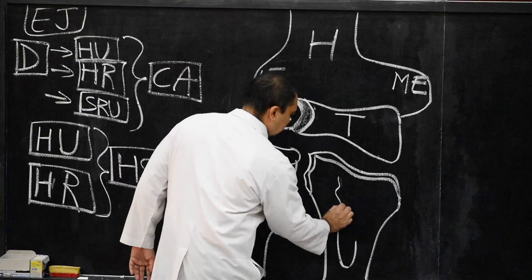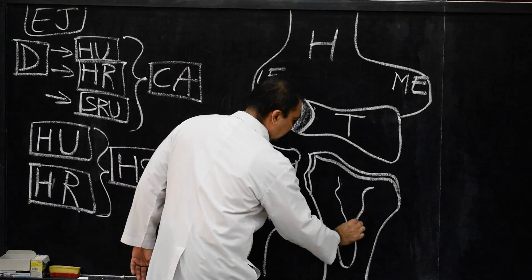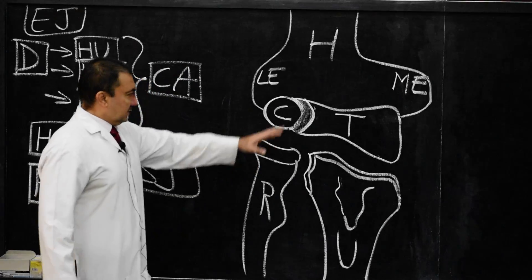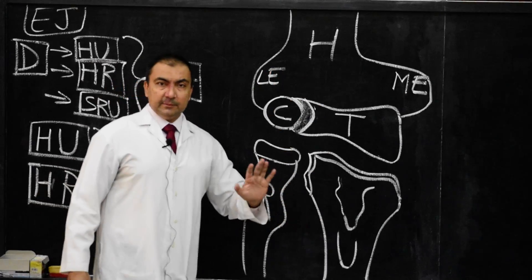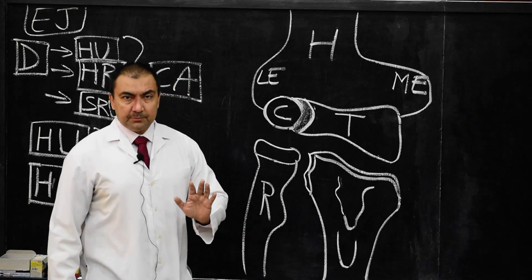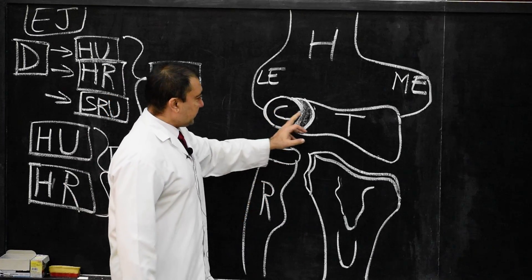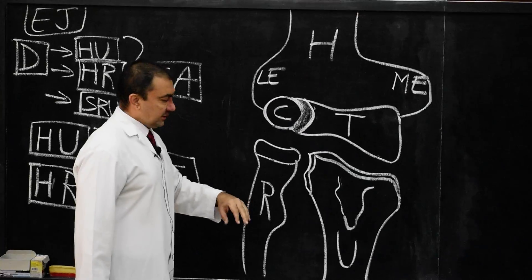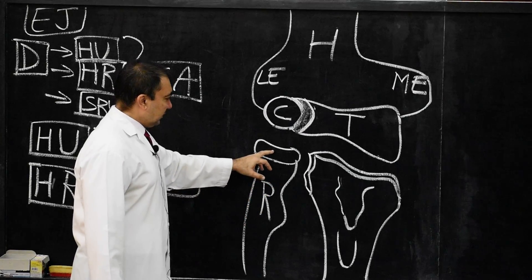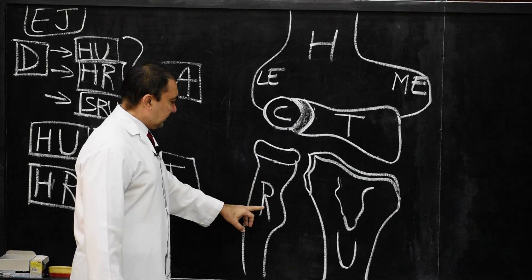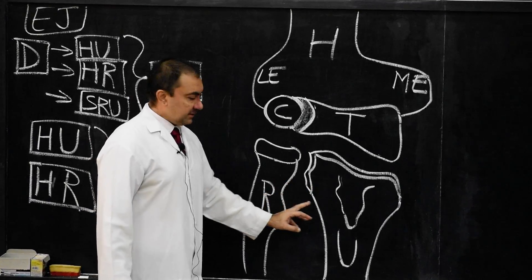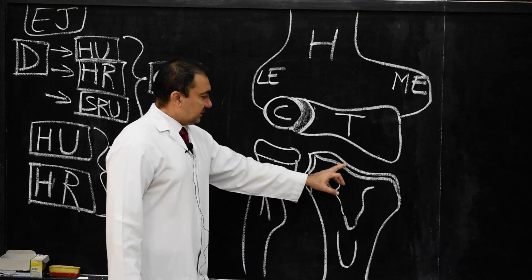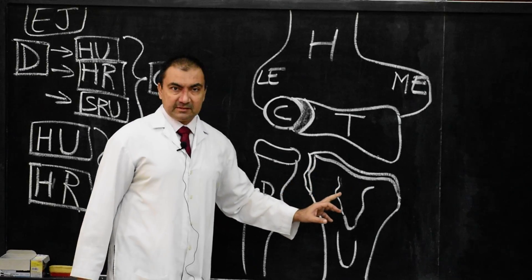This is the ulnar tuberosity. The line diagram of the elbow joint is now complete. The key points are: capitulum, trochea, lateral epicondyle, medial epicondyle, the humerus — below that, head of the radius, the radius bone, upper end of the radius, the ulna, upper end of ulna, and the trochlear articular surface.